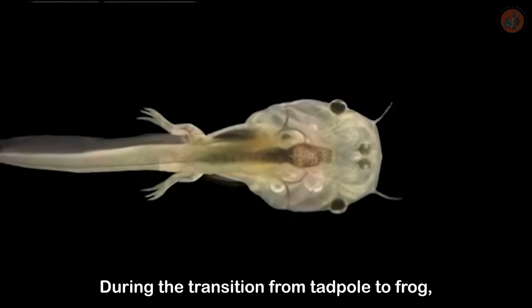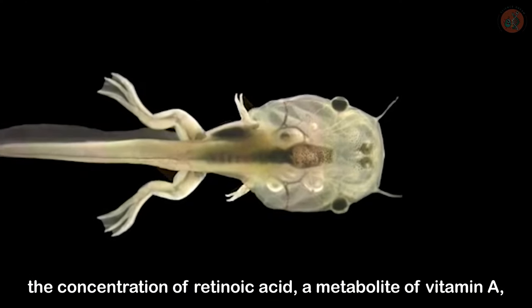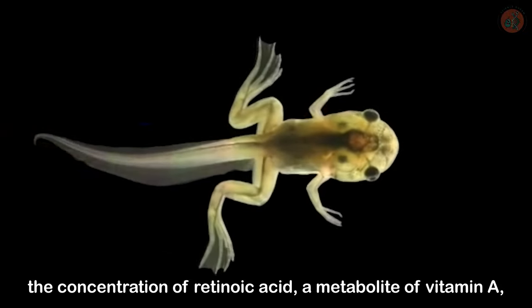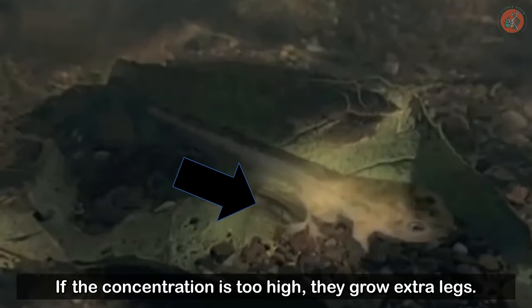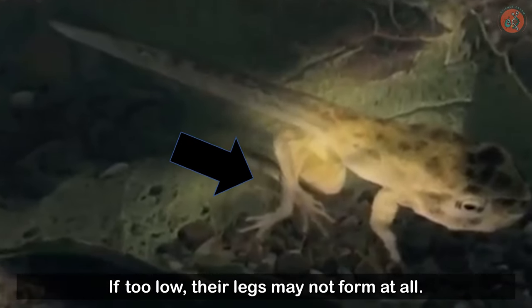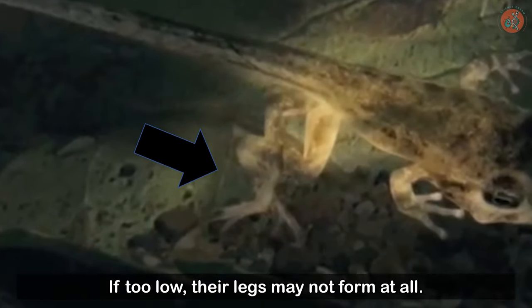During the transition from tadpole to frog, the concentration of retinoic acid, a metabolite of vitamin A, plays an important role in the formation of hind legs. If the concentration is too high, they grow extra legs. If too low, their legs may not form at all.